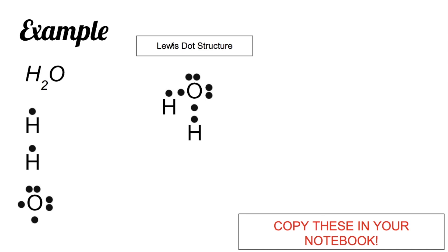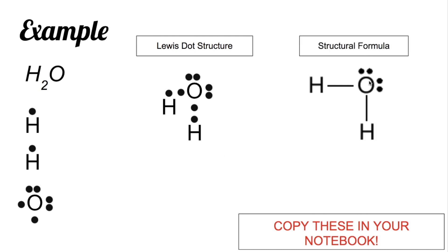That's the Lewis dot structure for the entire compound. For your structural formula, you need to substitute the pairs of valence electrons being shared with lines. Each line means one pair of valence electrons. The pairs being shared are substituted with lines, and you also have two lone pairs of electrons for oxygen. Lone pairs are pairs that are not being shared with other atoms — they only belong to oxygen.